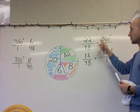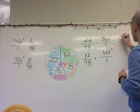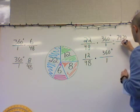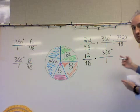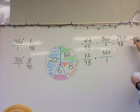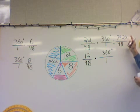So let's do this one first. 22 over 48 times 360 degrees over one. It ends up becoming 7,920 over 48. Last step in this problem is to take 7,920 divided by 48. If I do that, I get an answer of 165 degrees.